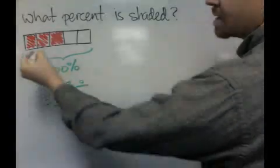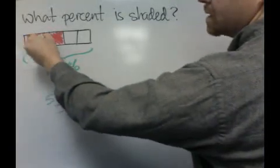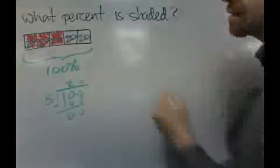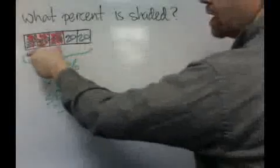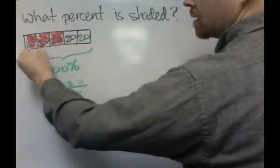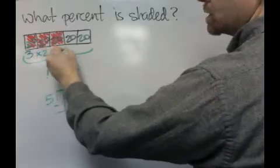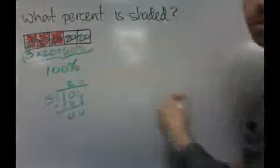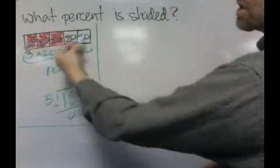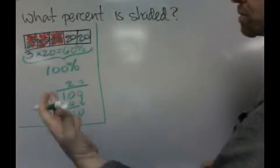So that tells us each one of these pieces stands for 20%. And since three of the five are shaded, that's 3 times 20, which equals 60%. So one technique says that each piece is worth 20%, so that's 60%.